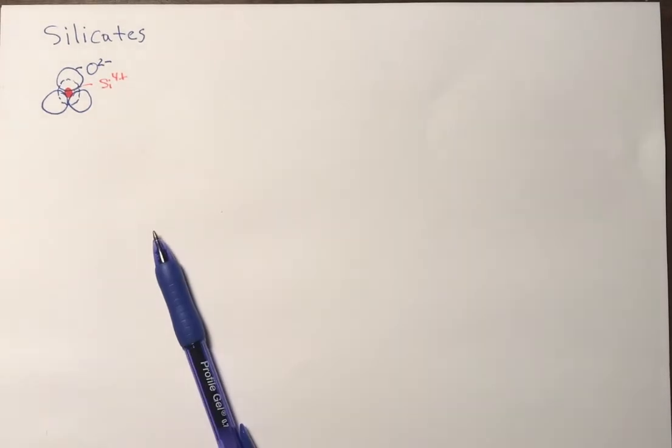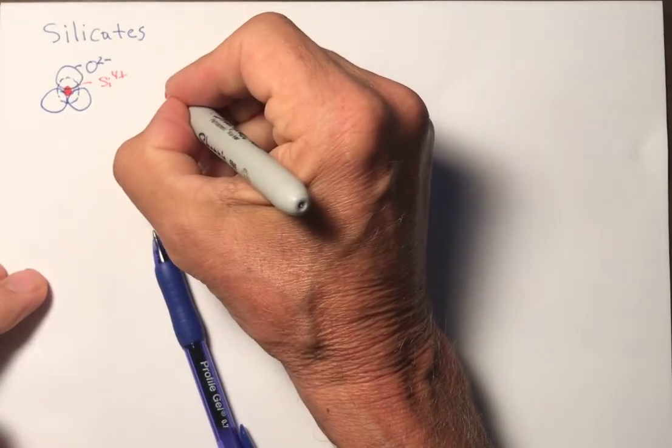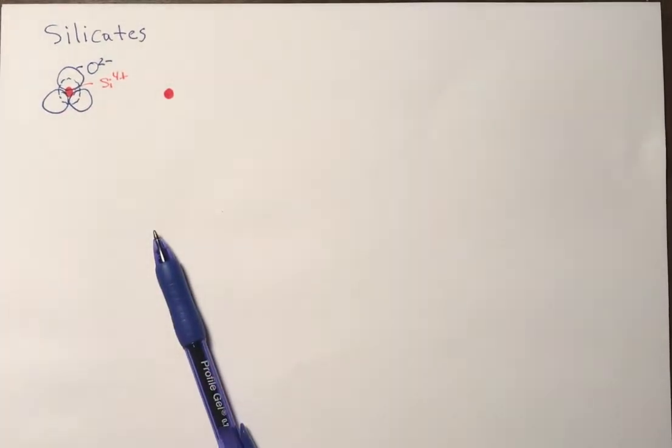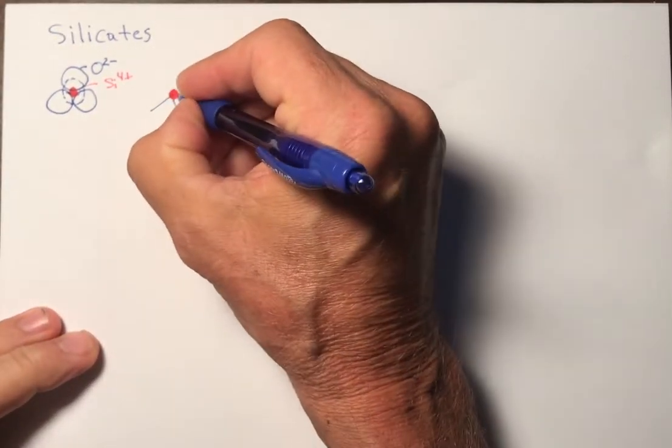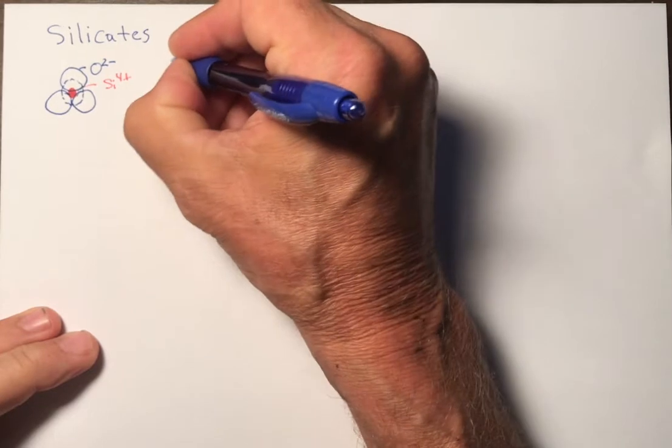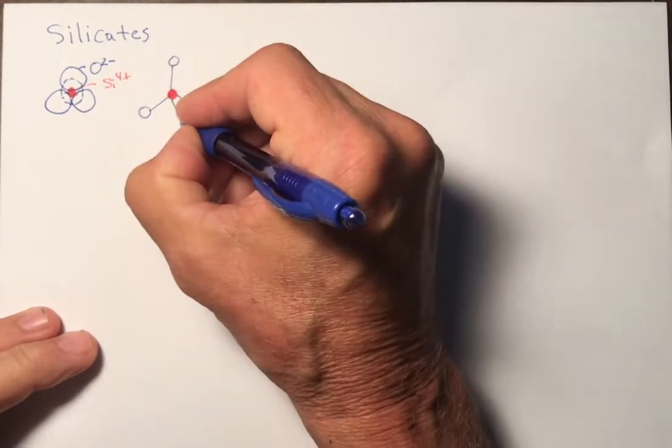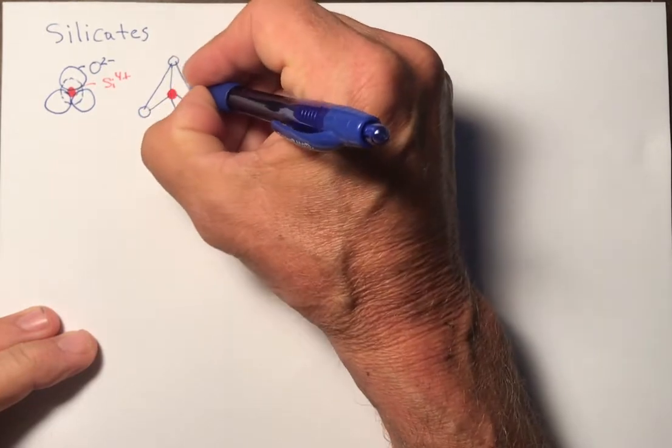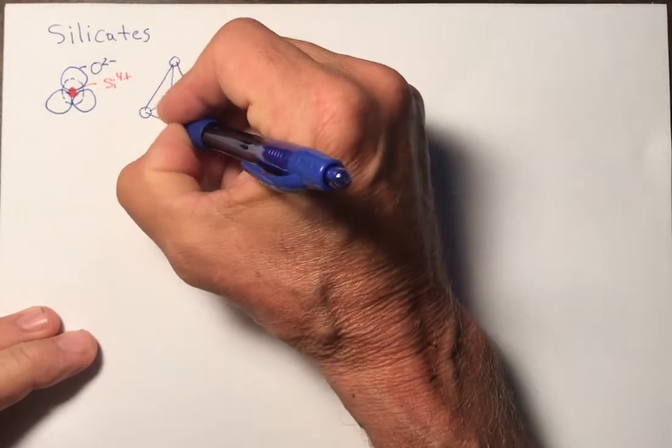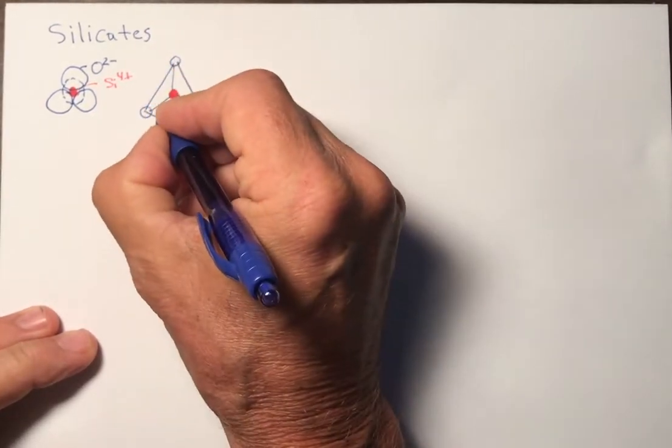We can also arrange it such that we have a ball and stick model. There's the silicon surrounded by one, two, three, four oxygens, like that. That forms a tetrahedron like this. The back side would be back there.